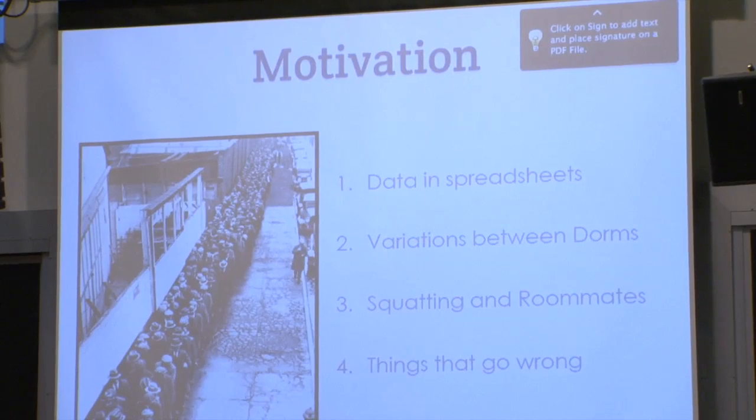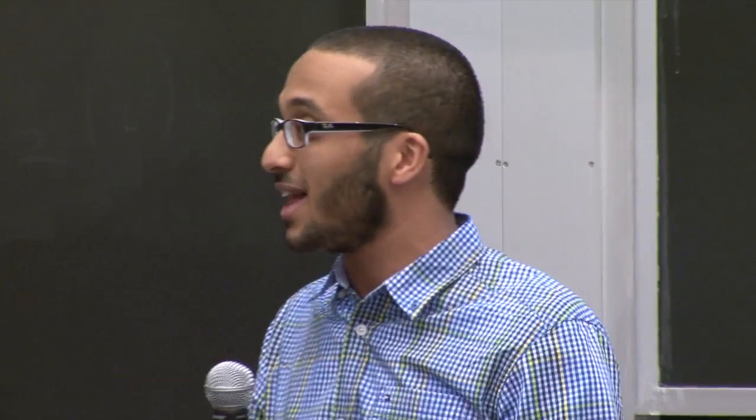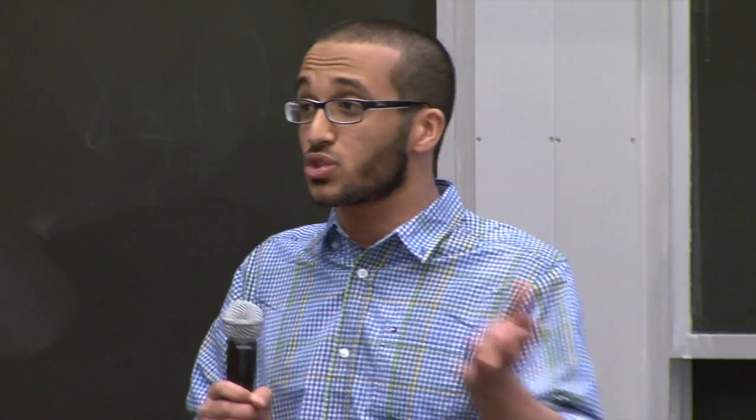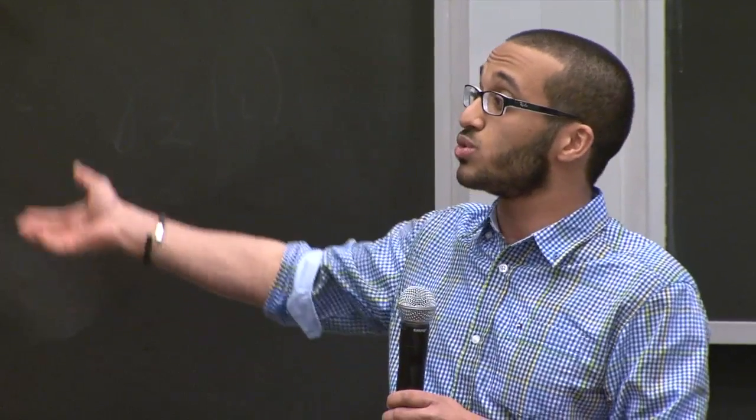The second big challenge was that dorms do their room assignments very differently within MIT. Some dorms get really creative — you can even hand your room to someone else. The third challenge is there are a lot of little perks about the room assignment you have to deal with. For example, there's the option to squat your room so you're not part of a lottery, or you choose a roommate and the system has to guarantee those two people actually live together. You can also designate someone to choose the room for you — that happens in the real manual lottery because you can text someone and say, 'hey, pick my room for me.' Without that flexibility, the solution won't work.